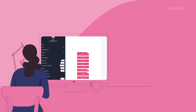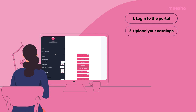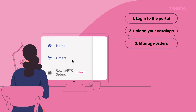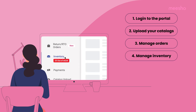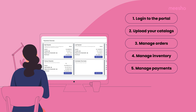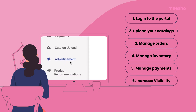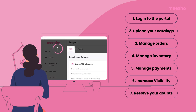Here is an overview of the entire process on the Misho Supplier Admin Panel: 1. Log in to the Portal, 2. Upload your Catalogues, 3. Manage Orders, 4. Manage Inventory, 5. Manage Payments, 6. Increase Visibility, 7. Resolve your doubts. Let's start understanding more about each step.